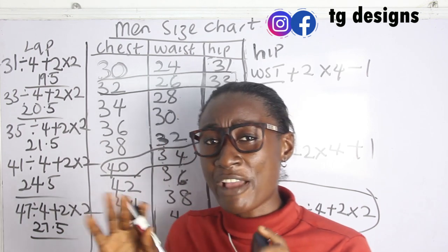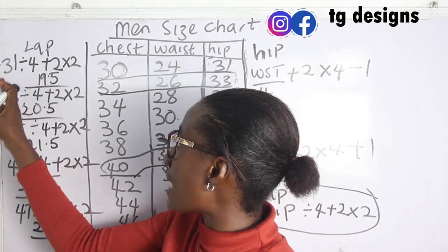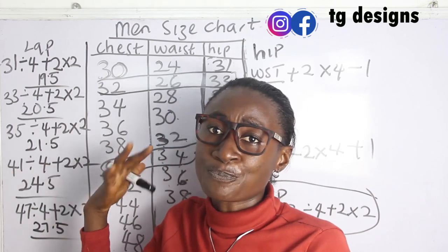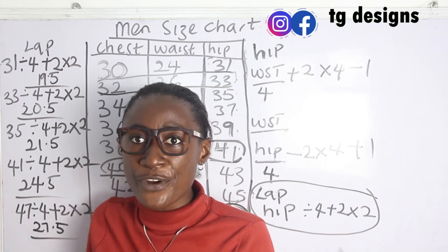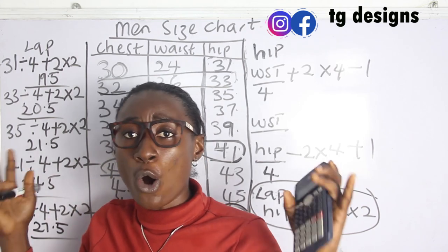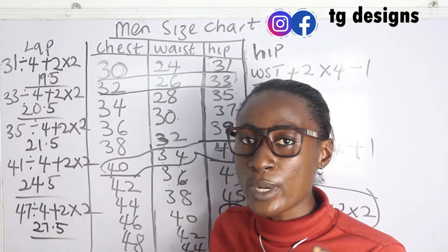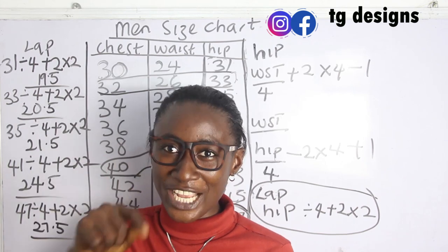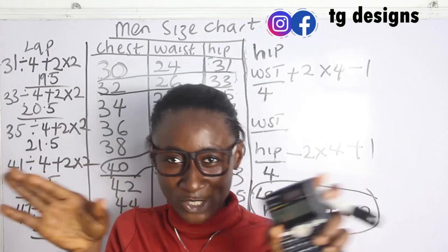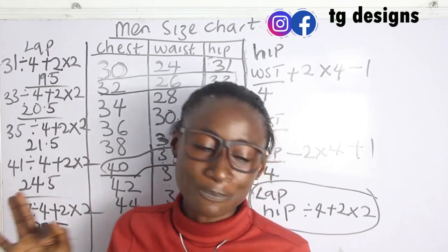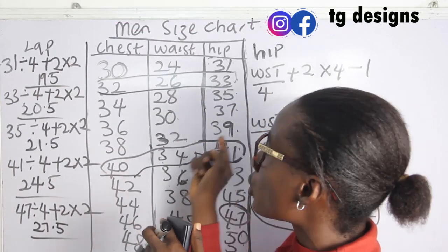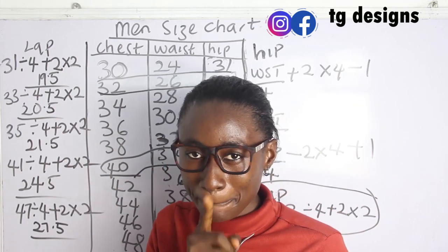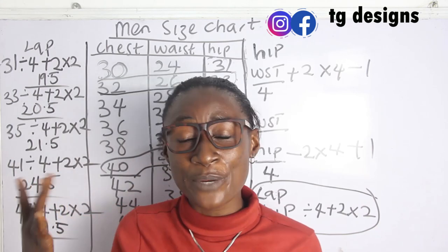When you're done, check that your measurements are consistent. The round lap measurement may vary slightly — for size 30 with 19.5 inches, you might decide to make it 20 inches for more room. Your round lap determines how wide or slim you want the trousers to be. You can also use your round lap to cross-check your hip measurement — they intertwine with each other.